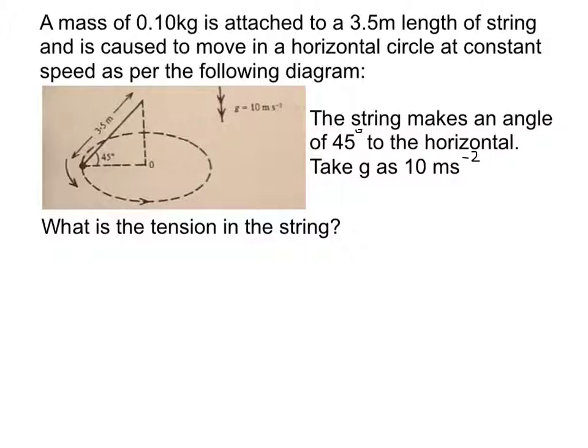Now if we look at the diagram, we have a mass which has a downward weight force acting on it and it also has tension force acting up through the string. If we do a comparison, the weight force acting down should be the same as the vertical component of the tension. So we could say here that this is equivalent to the weight.